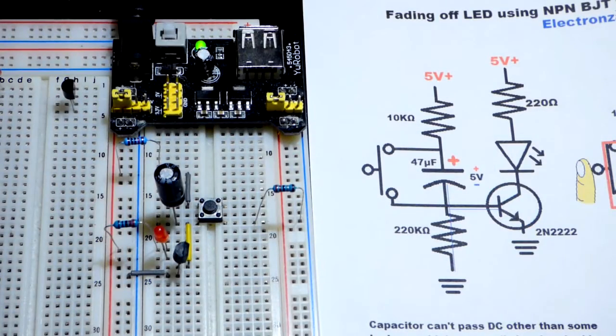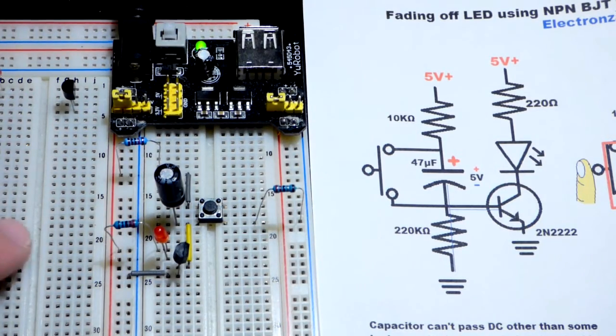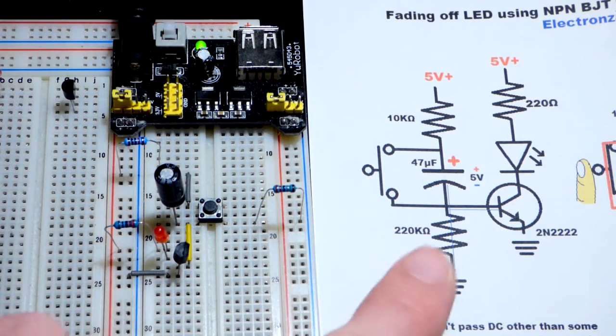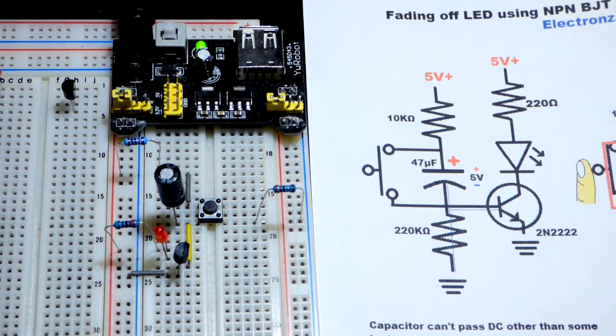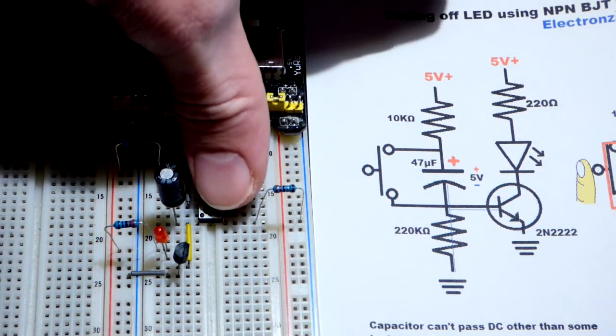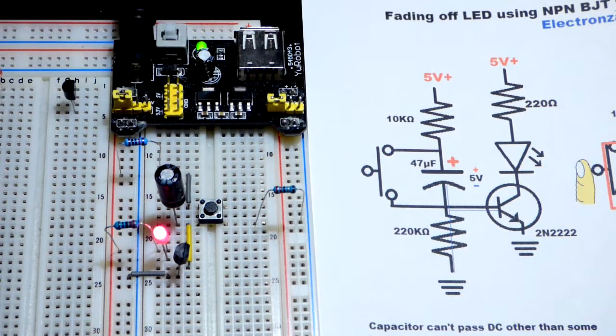Alright, so now in this video we're going to look at this circuit. I have an NPN bipolar junction transistor here, 2N2222, and with the help of a capacitor, by pressing the switch, the LED comes on and then it fades off.